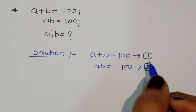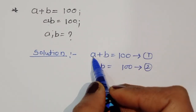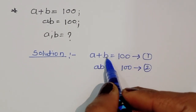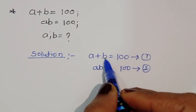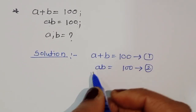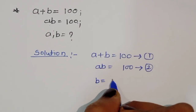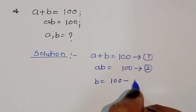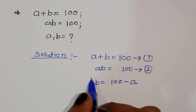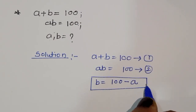Now we have to find out the value of a and b. We can do one thing: from a plus b equals 100, we can say b is equal to 100 minus a. This is equation number 3.